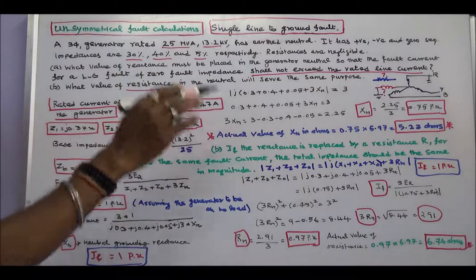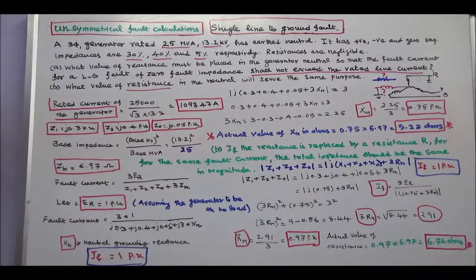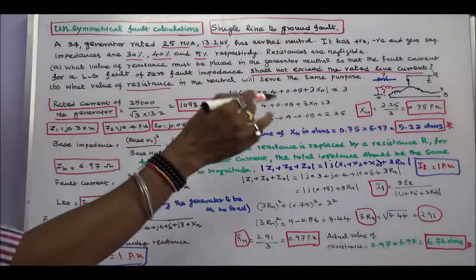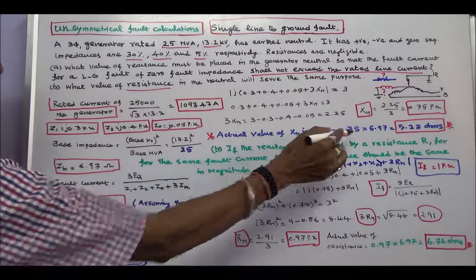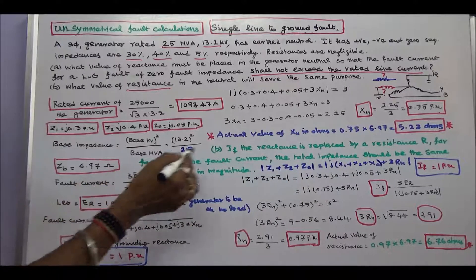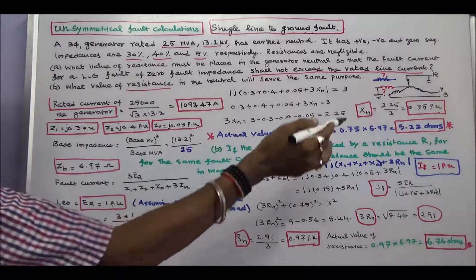The value is in per unit. Xn value is in per unit. Actual value is per unit value into base value, 0.75 into base 6.97. Actual value of Xn in ohms is 5.23.